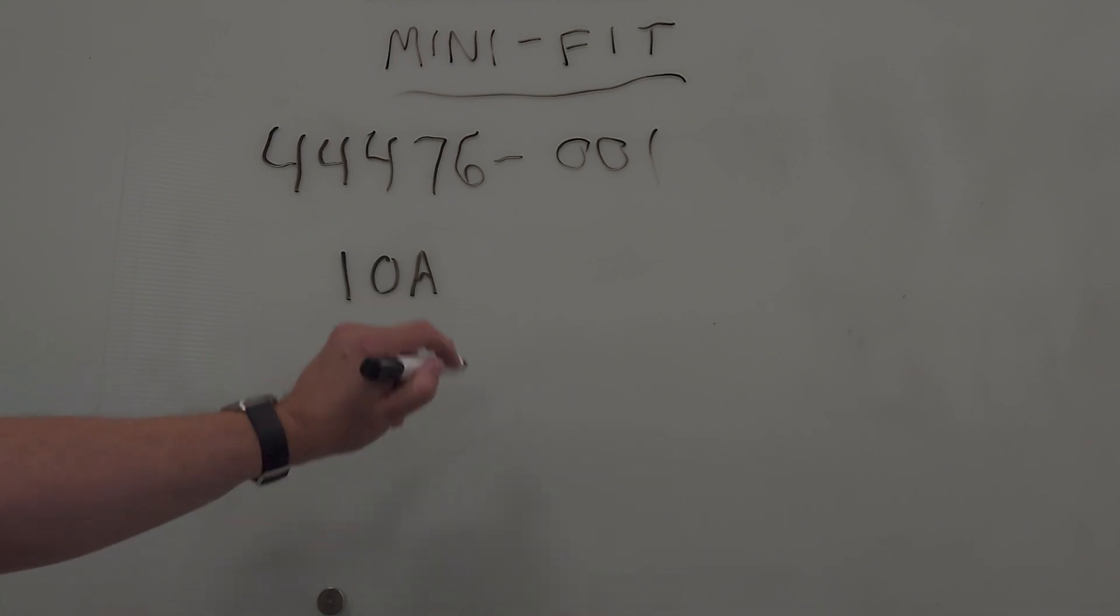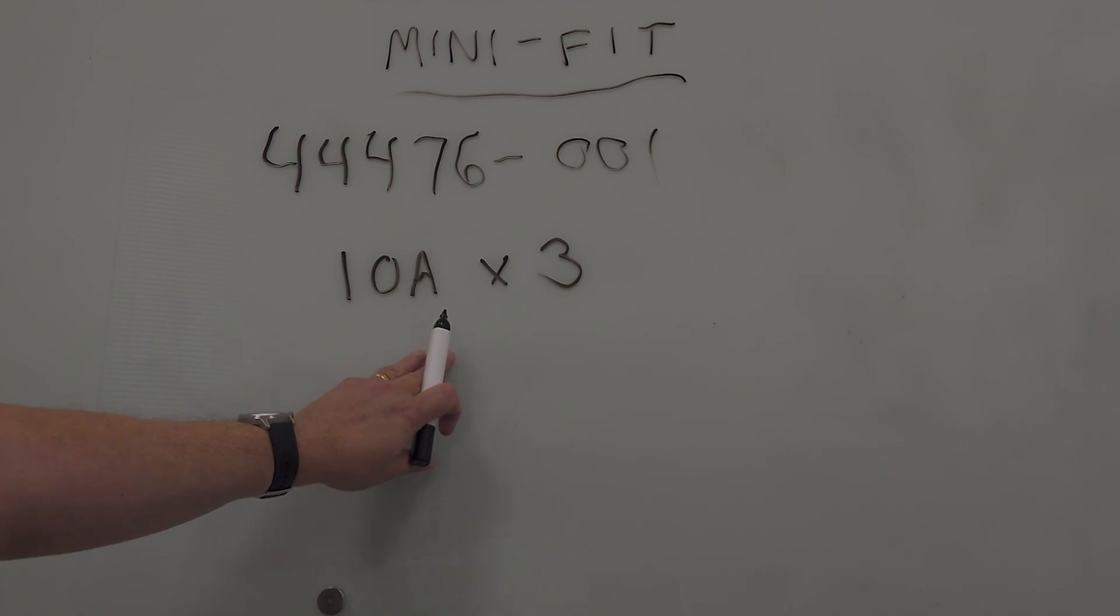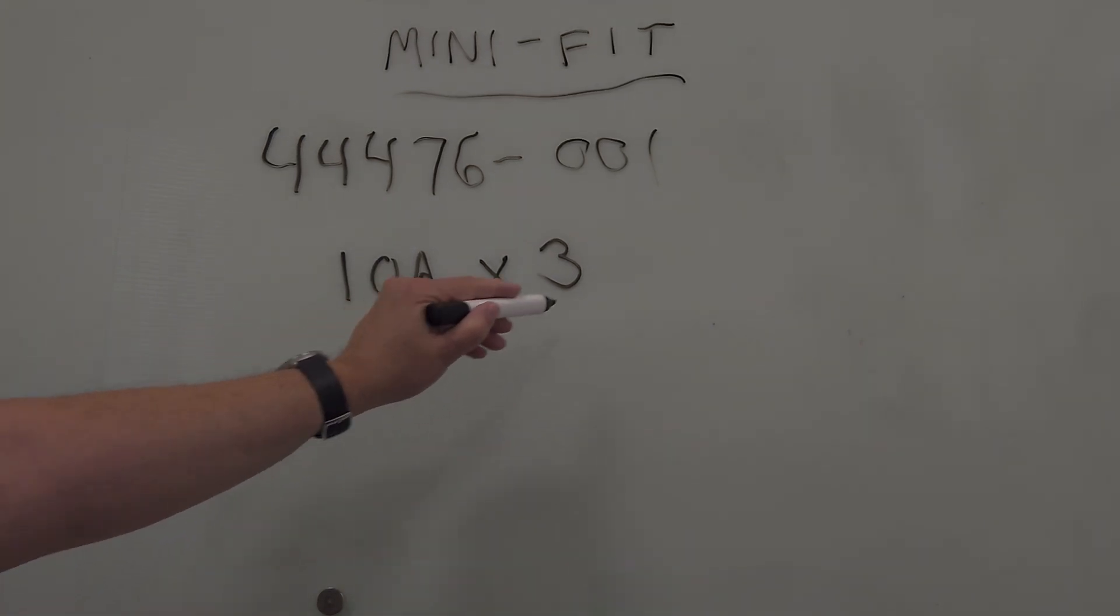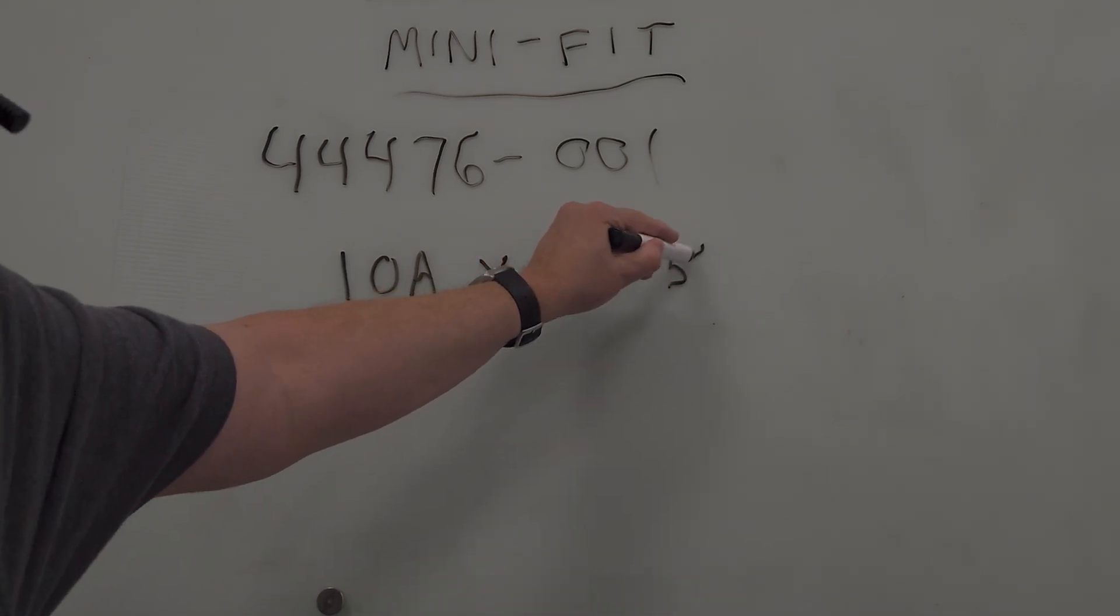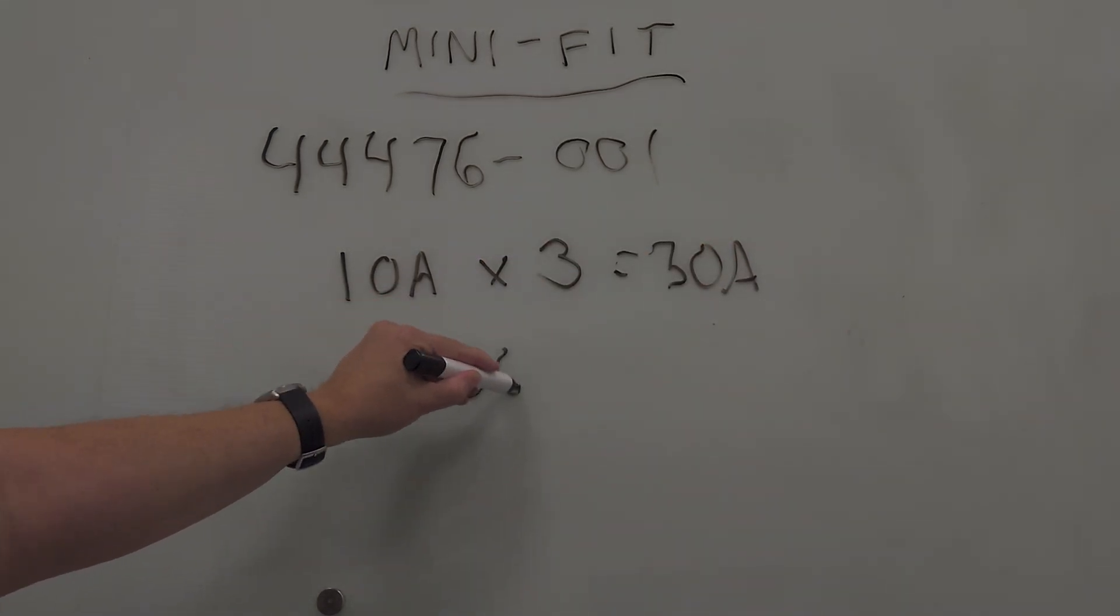Whereas for the CPU, it's 10 amps by 4. But we're talking about PCIe today, so it's 10 amps by 3. Now, you could take that 30 amps that that comes out to and you can multiply it by 12 and get 360 watts, right? Easy math.